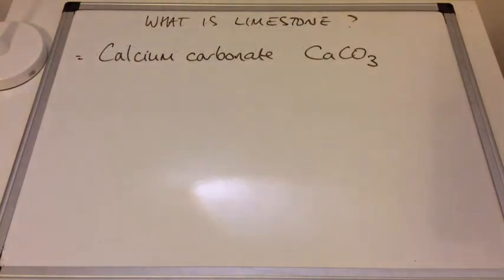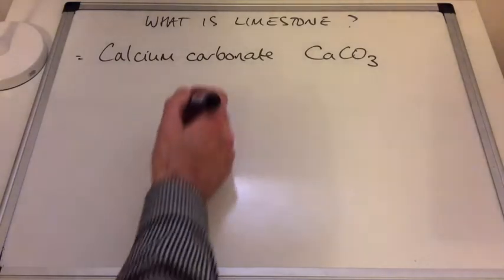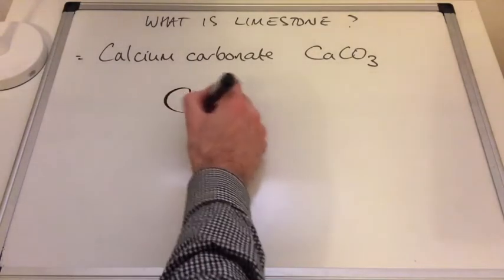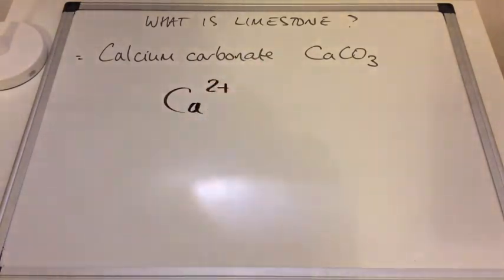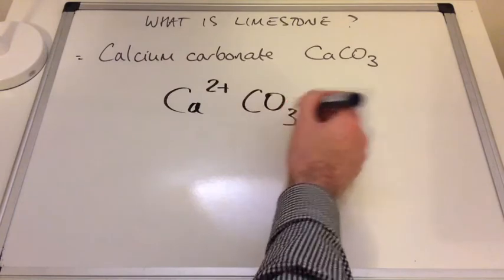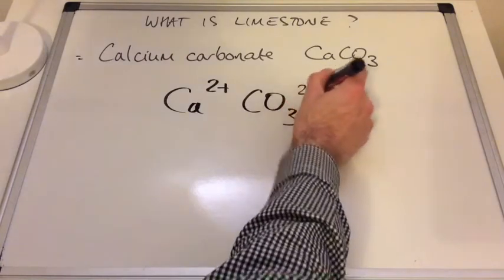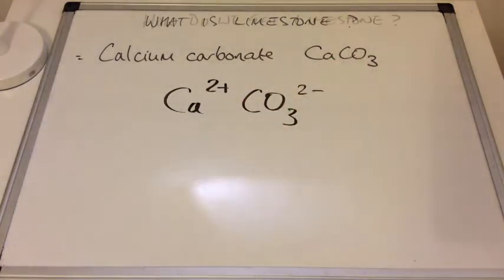So what is limestone? It's essentially the chemical calcium carbonate, which contains the calcium 2+ ion and the carbonate ion, which has the formula CO₃²⁻.